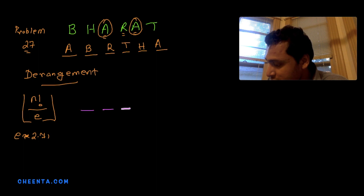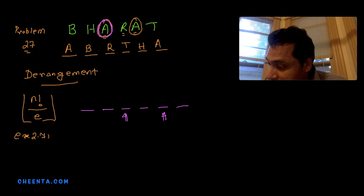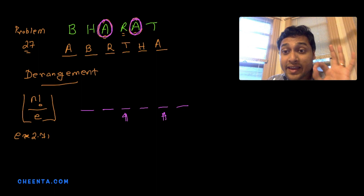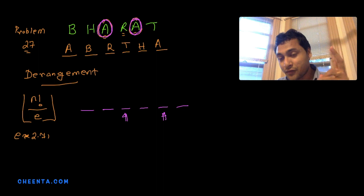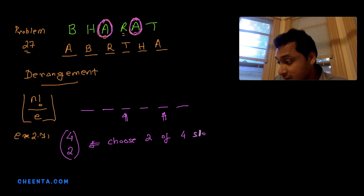Let's draw the six slots: 1, 2, 3, 4, 5, 6. The third and fifth slots are where the repeated letter A originally sits. The first question is: where can the two A's go? They can go to any of the other four slots. So we choose 2 of those 4 slots — that's C(4,2) ways.